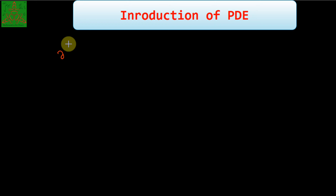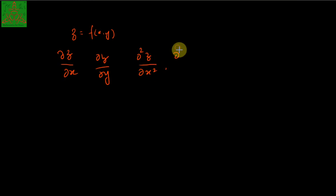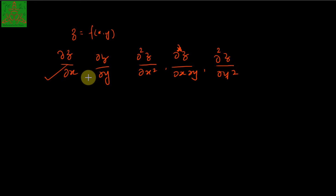For example, z is a function of two variables x and y. Then we can talk about del z by del x, del z by del y. And for the second-order values, we can talk about del squared z by del x squared, del squared z by del x del y, del squared z by del y squared. So if you have a function z, which is a dependent variable depending on x and y, and x and y are independent variables, then any equation involving these partial derivatives is called a partial differential equation.